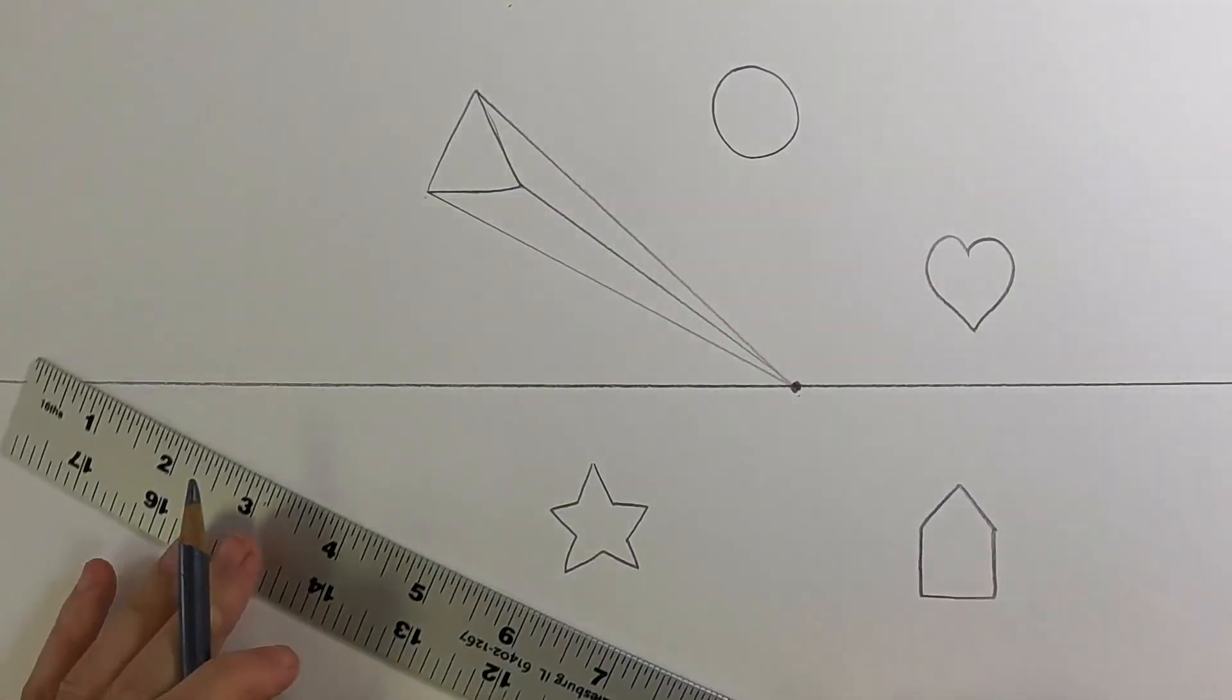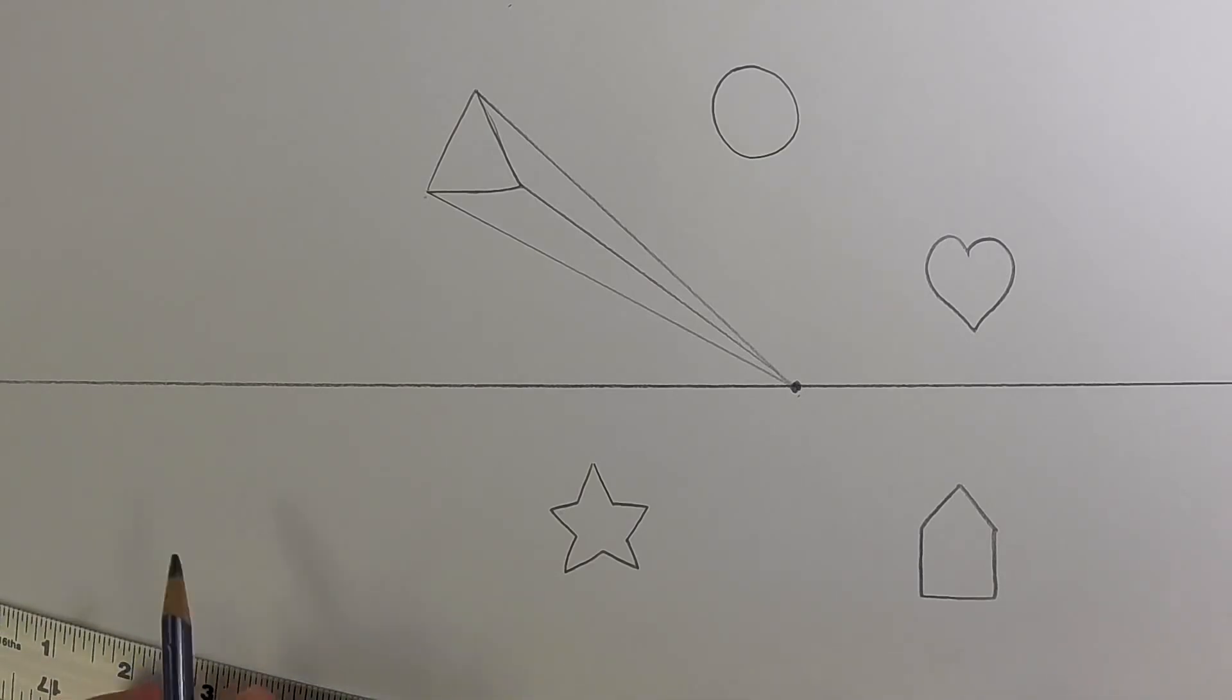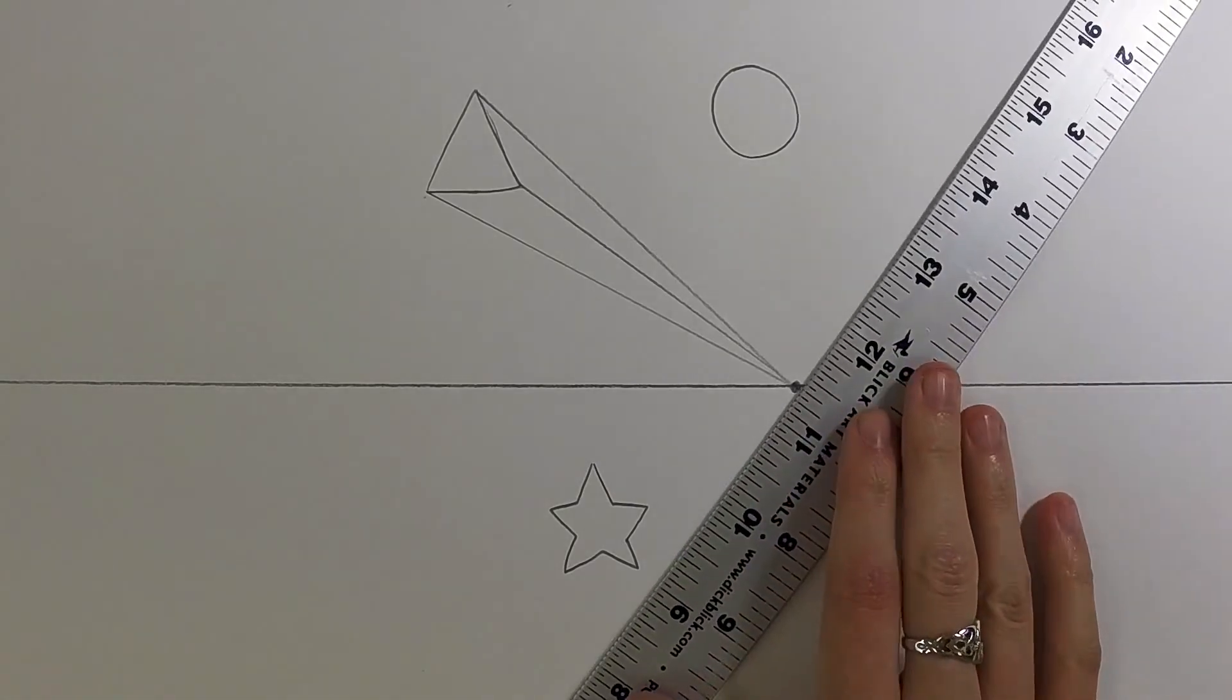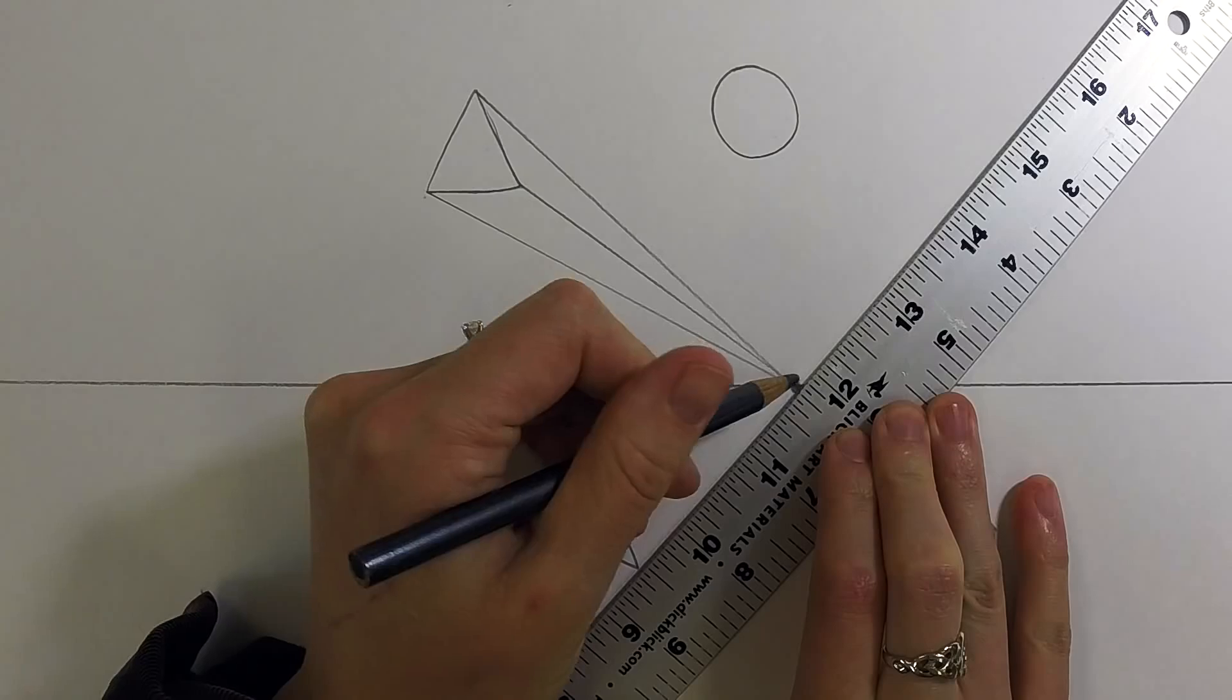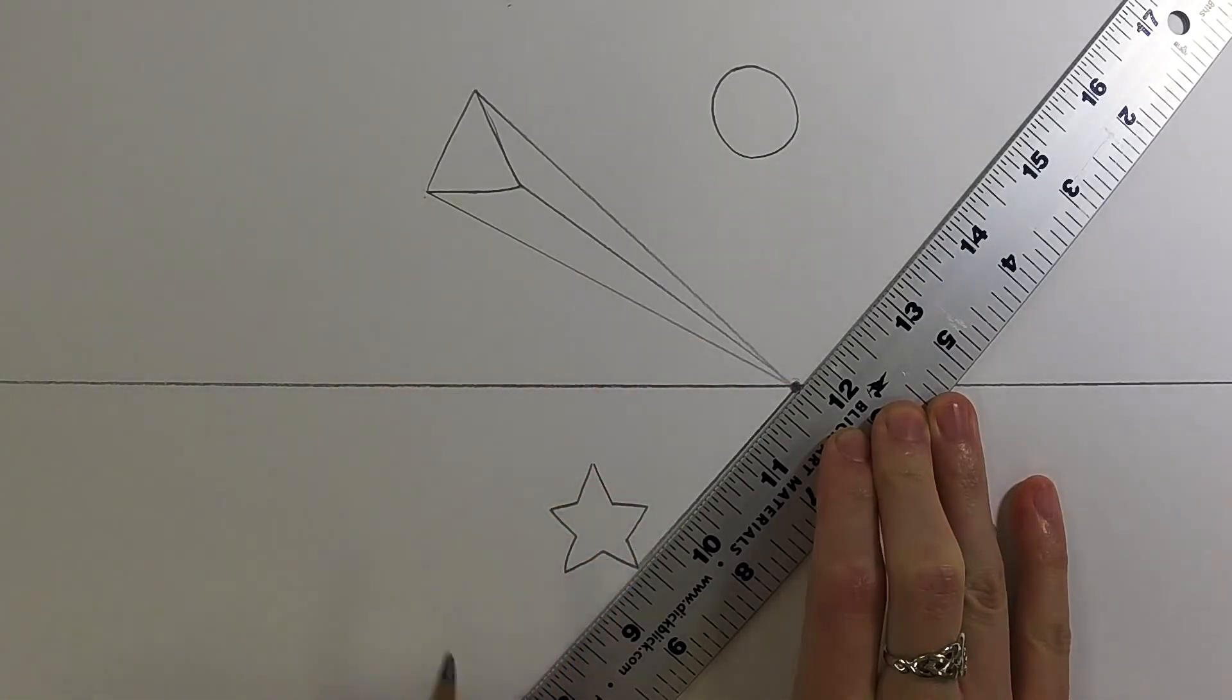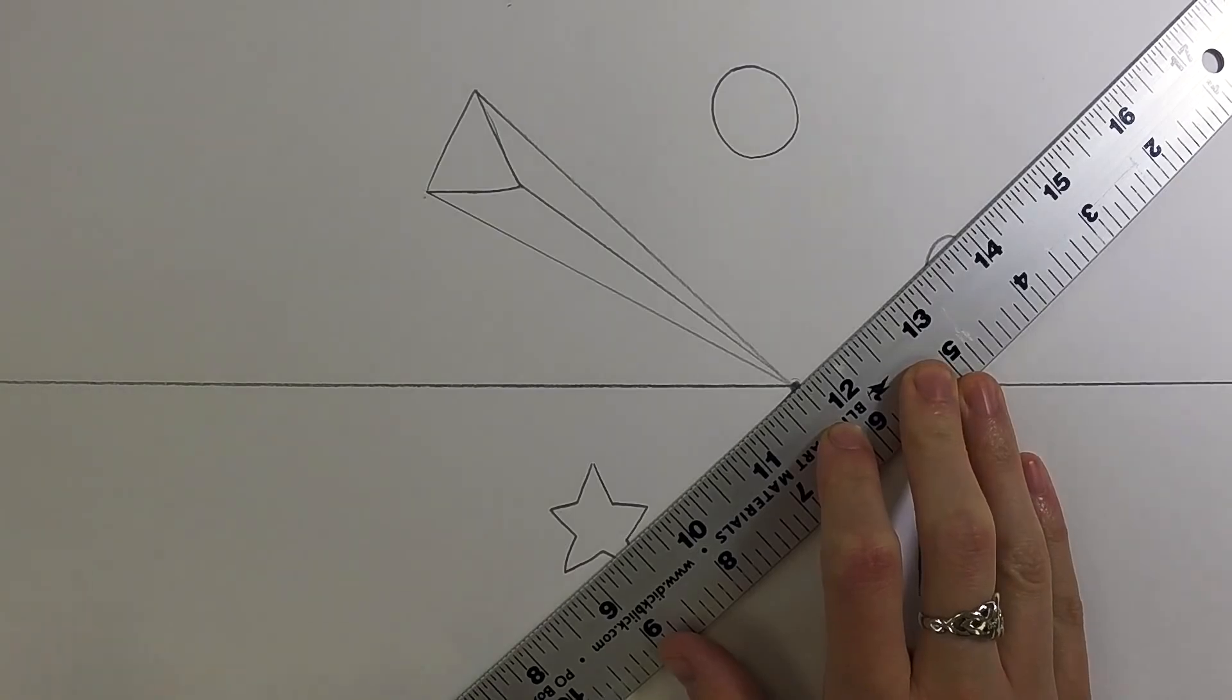And with this triangle you can see that all of the converging lines will go to the vanishing point. With the star we'll start with the corners as well, and there are quite a few more corners on this one than there are on the triangle.